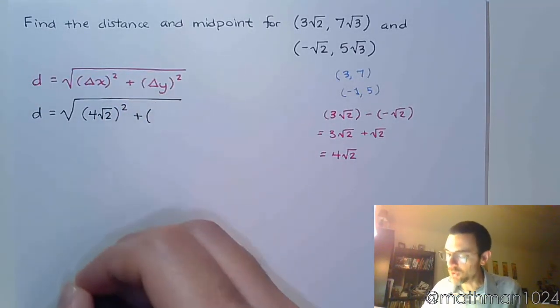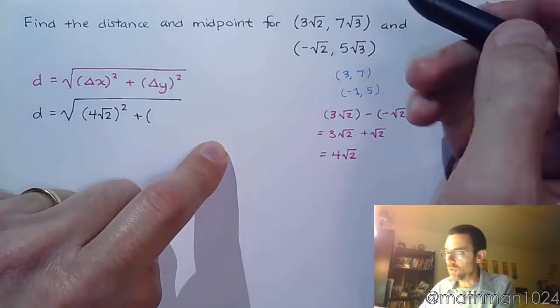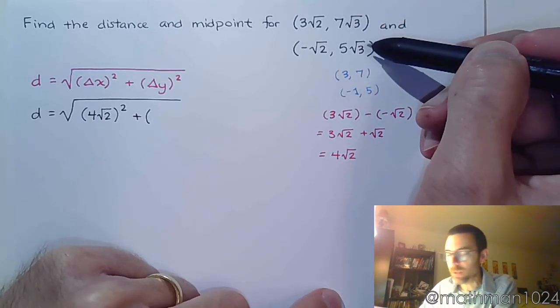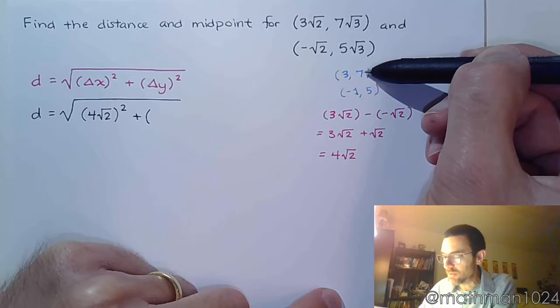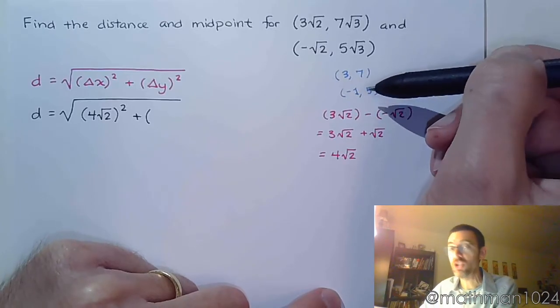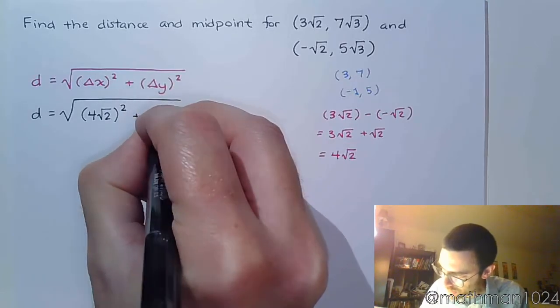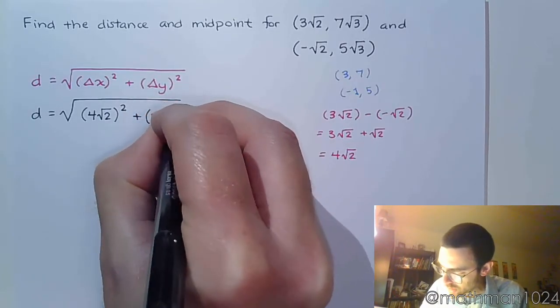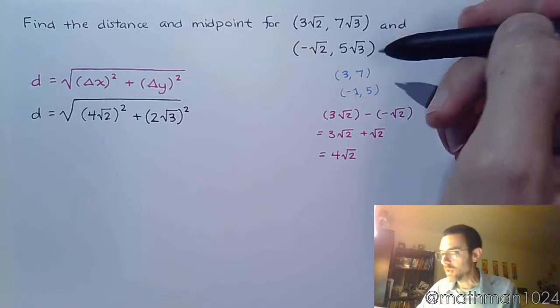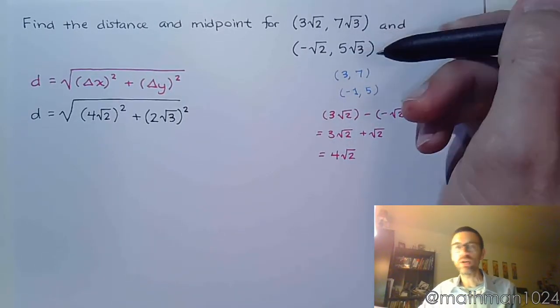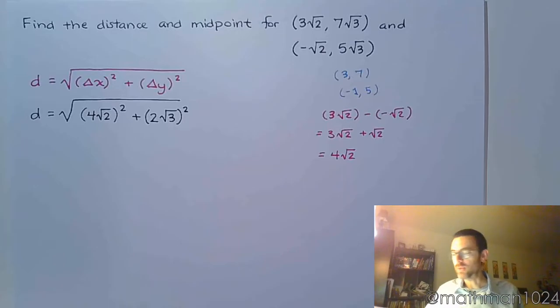Same thing for the change in y. So what's the change in these two guys? It may be kind of crazy, but look at this. What's the change from 7 to 5? The change is 2. So this is going to be 2√3. So the difference in the coefficients is 2, and you're bringing along those coefficients, so it's 2√3.